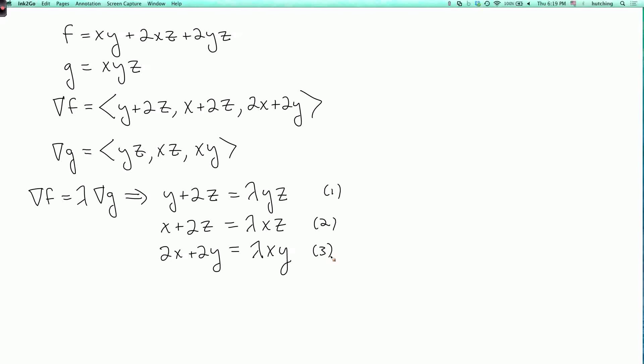So the algebra to solve this is a little bit non-trivial, but let's see if we can manage it. So if we look at the first two equations, if we subtract them, then the z's will disappear. So let's look at equation one minus equation two. That tells us that y minus x equals lambda yz minus lambda xz. And both sides of this are divisible by y minus x. So I can write this whole thing as y minus x times 1 minus lambda z equals 0.